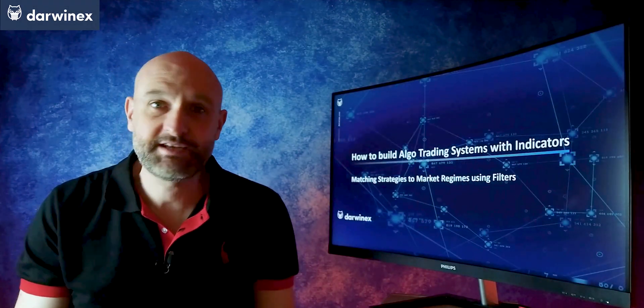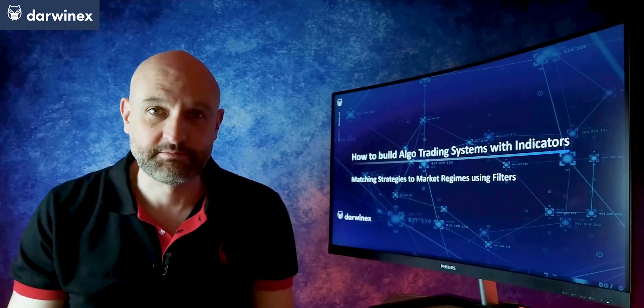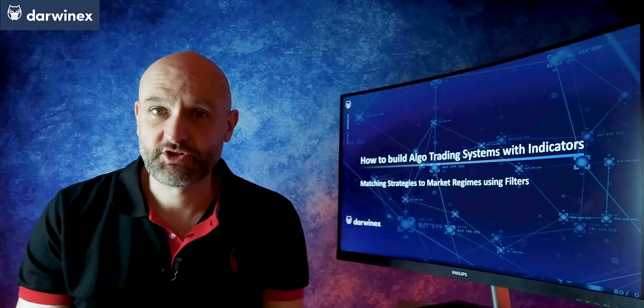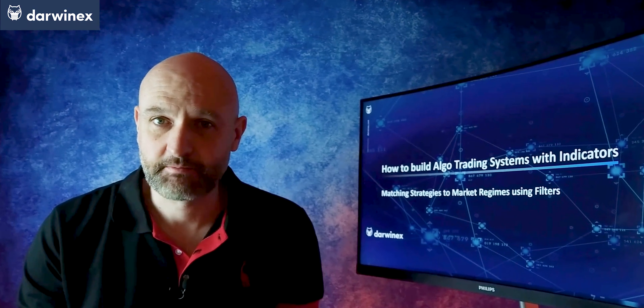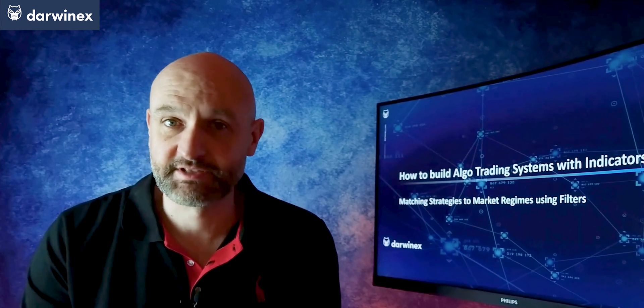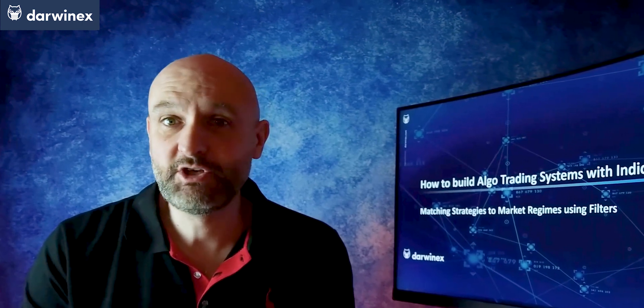In today's episode I'll be looking at how to categorise price action into different market regimes. Then based on that categorisation it's possible to use information to help filter the signals of a trading strategy. I'll be using what we've already learned in previous episodes about volatility filters and also trend filters, and look at options for how these might be utilised. Using this technique based on market regime categorisation can help to better inform and define your trading strategy's rules.